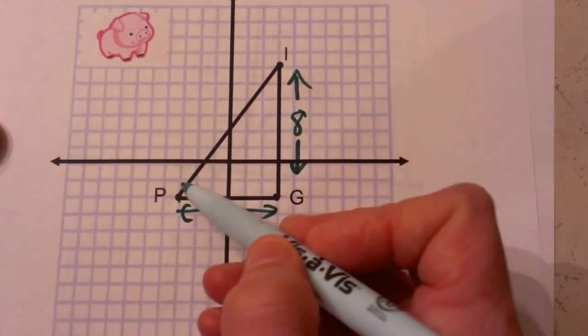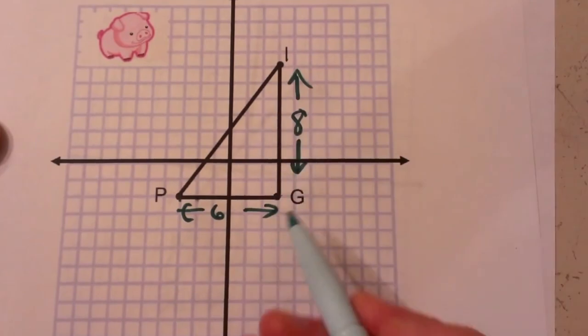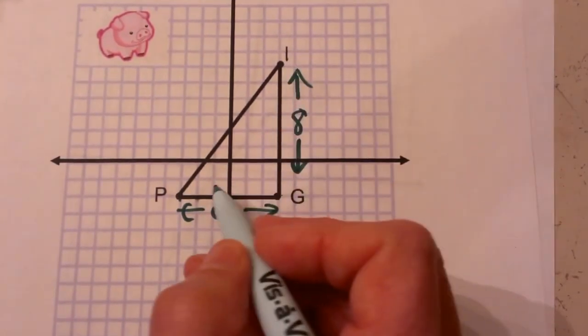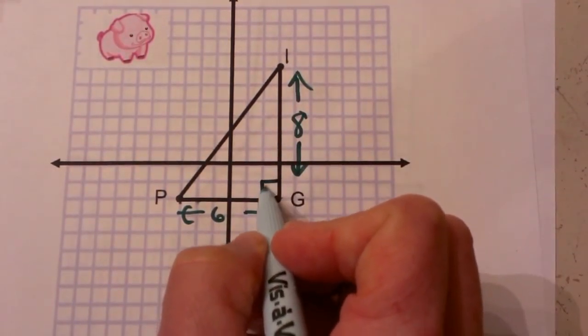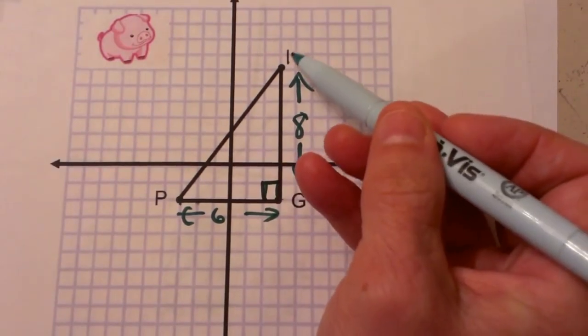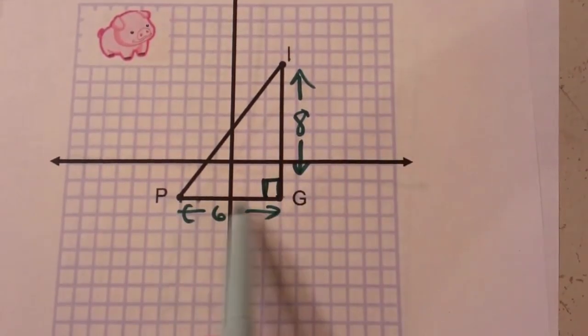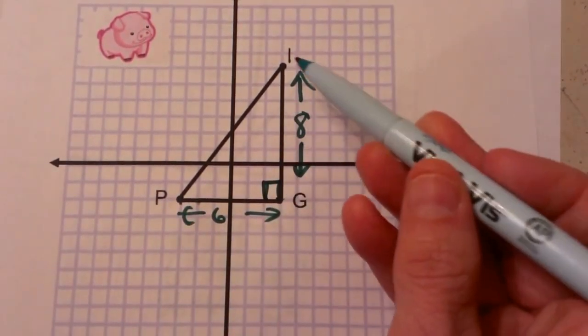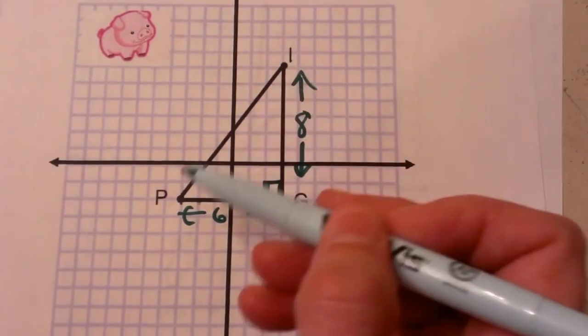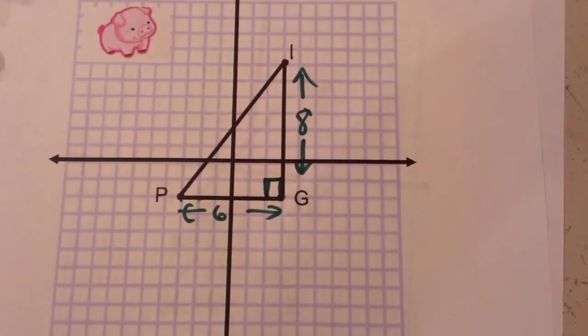Now I need to find the distance of PI. Well, since this is set up already you can see that we have a right triangle, so we can use the Pythagorean theorem using A squared plus B squared equals C squared. So let's go down and write our formula.